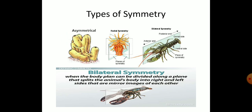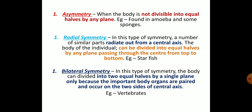Coming to a very important topic — types of symmetry: asymmetrical, radial symmetrical, and bilateral symmetrical. In asymmetry, as in sponges, the body cannot be cut into equal halves in any plane. In radial symmetry, the body can be divided into two equal halves at any plane passing through the central axis — as seen in starfish. In bilateral symmetry, the body can be divided into two equal halves by a single plane — a mirror image of right and left sides, as in humans.